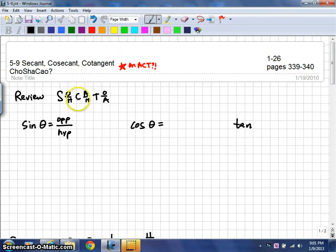For cosine of an angle, the CAH part of SOHCAHTOA refers to the adjacent side or the adjacent leg in a right triangle over the hypotenuse side.